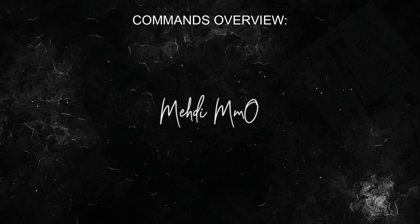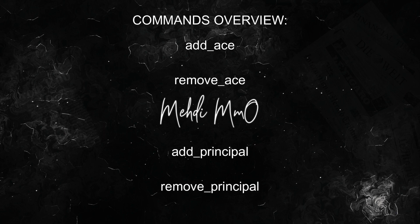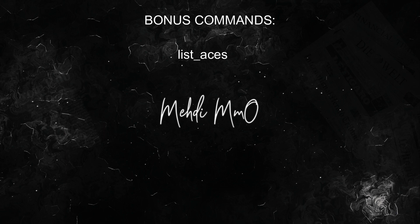To summarize, here's an overview of all commands covered: add_ace sets an ACE for a principal to allow or deny; remove_ace removes the ACE for that principal; add_principal adds a child principal to a parent principal, inheriting ACEs; remove_principal removes the child principal from a parent principal, revoking inherited permissions. Bonus commands: list_aces shows all ACEs for each principal and their status (allow, deny, or unset); list_principals displays all principals in a child-to-parent hierarchy.